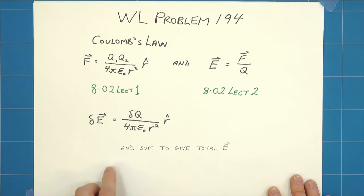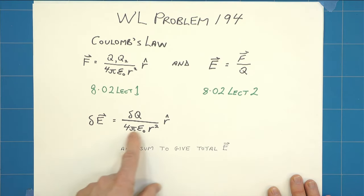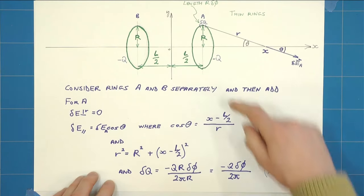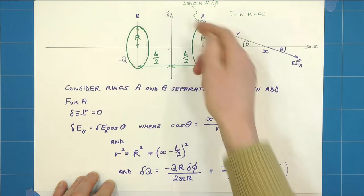So what we will do is we will sum the various delta q's that we deal with in the problem to get a total electric field at some point x. We're told we have two charged rings.